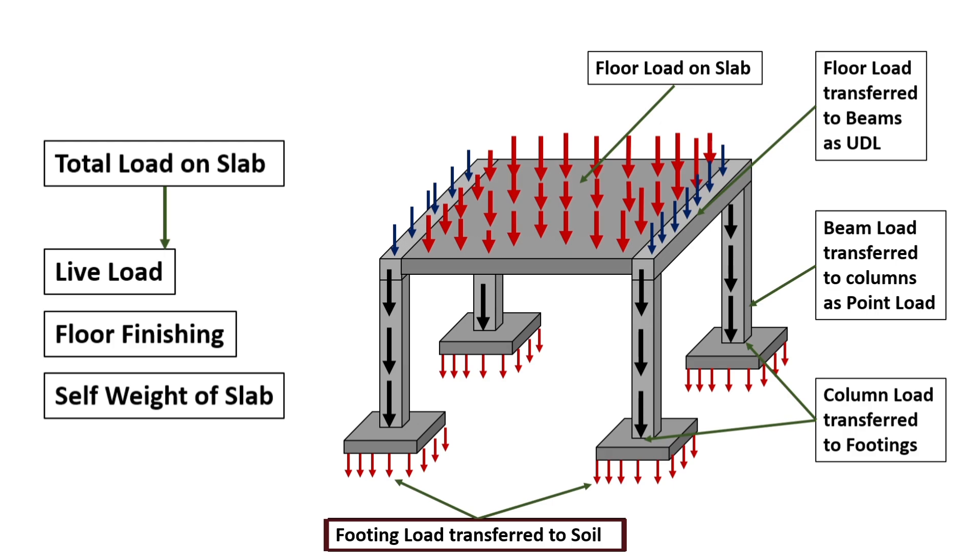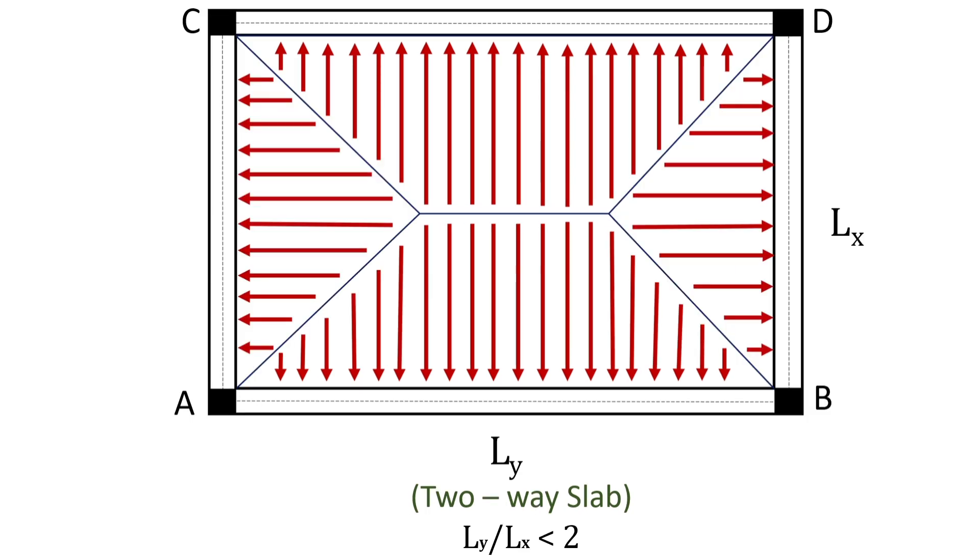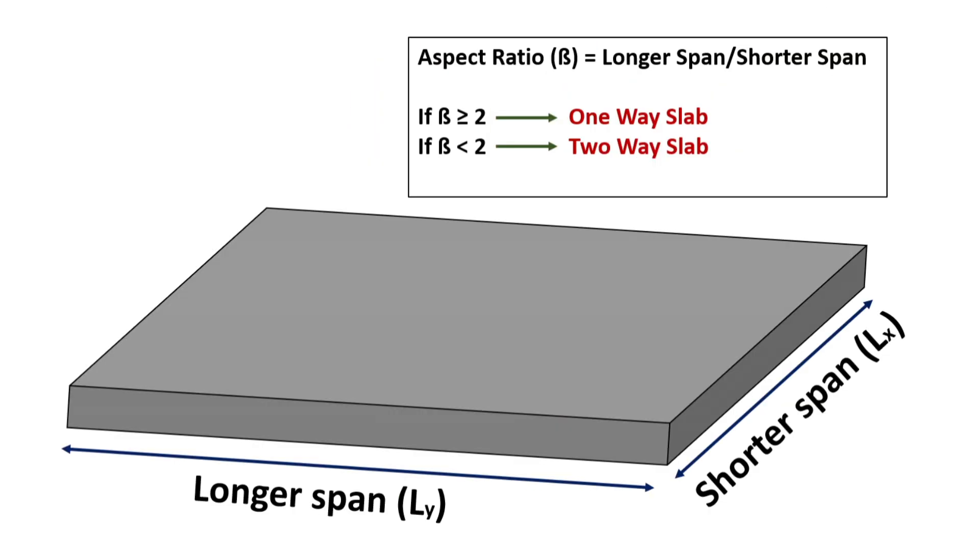The transfer of loads from a slab to beams depends completely on the type of slab whether it's a one way slab or a two way slab. The type of slab is determined by calculating the aspect ratio that is the ratio of longer span to the shorter span as Ly upon Lx. If Ly upon Lx is greater than or equal to 2, the slab is considered as a one way slab. And for a two way slab, Ly upon Lx is less than 2.